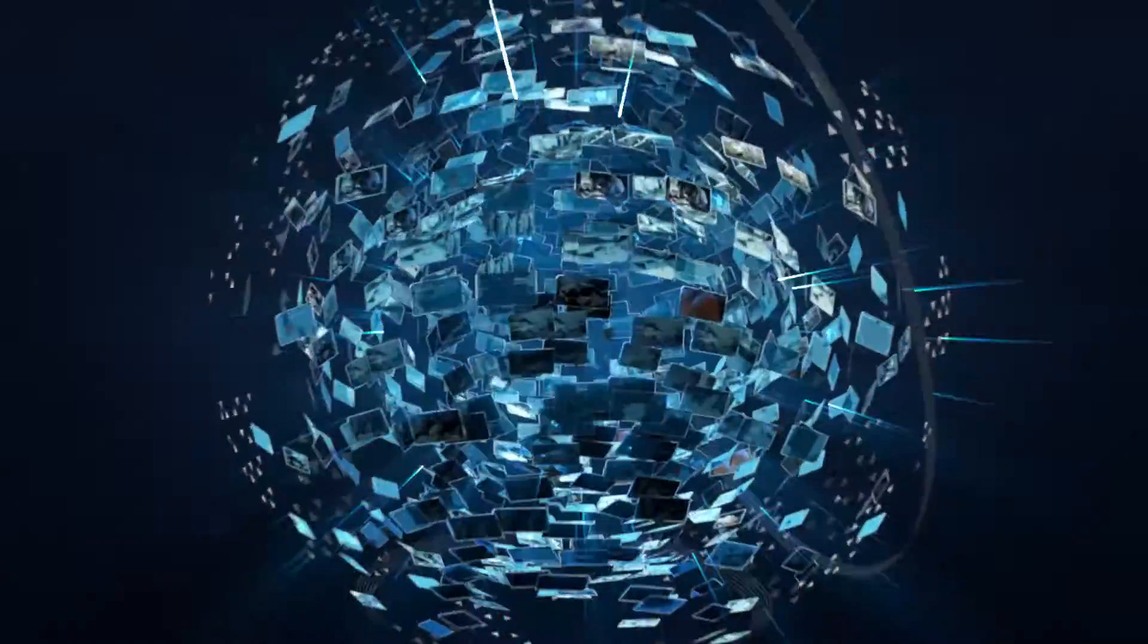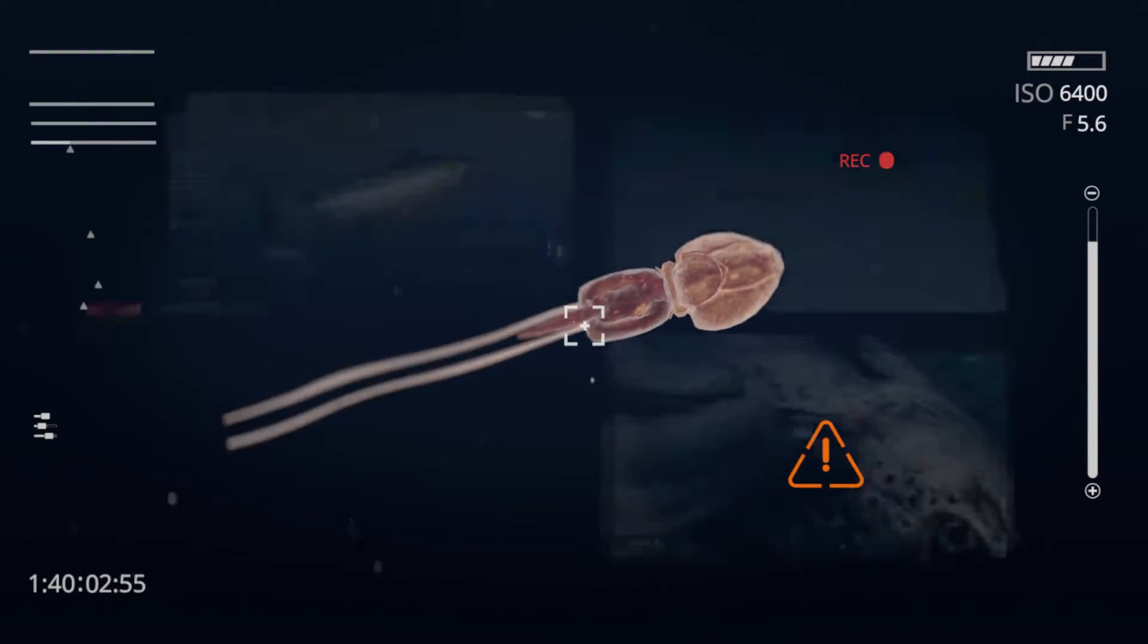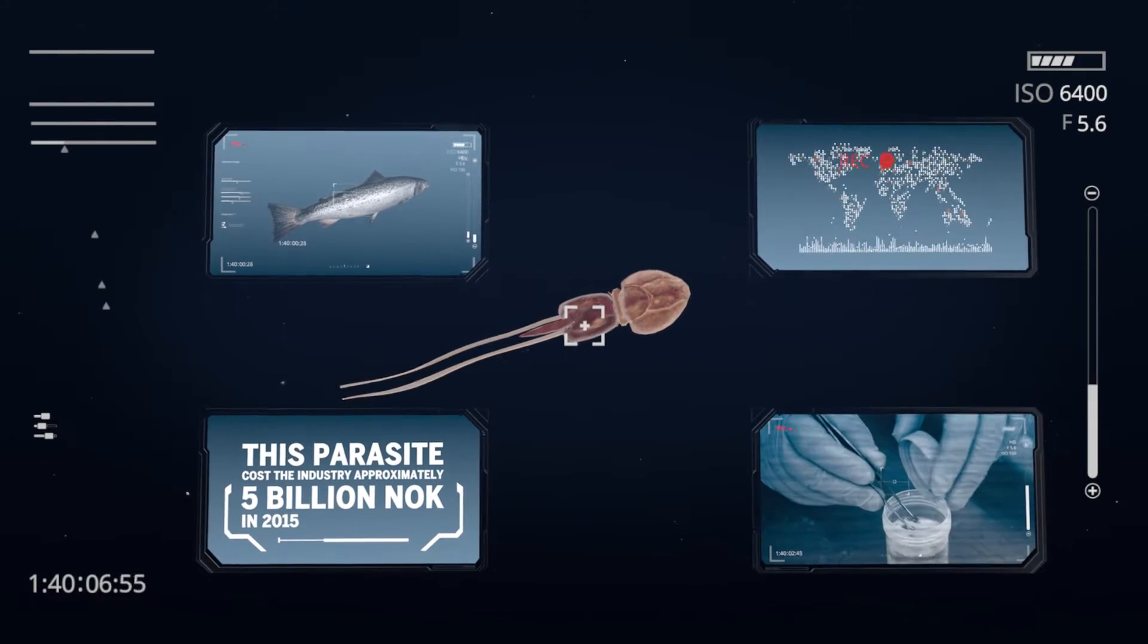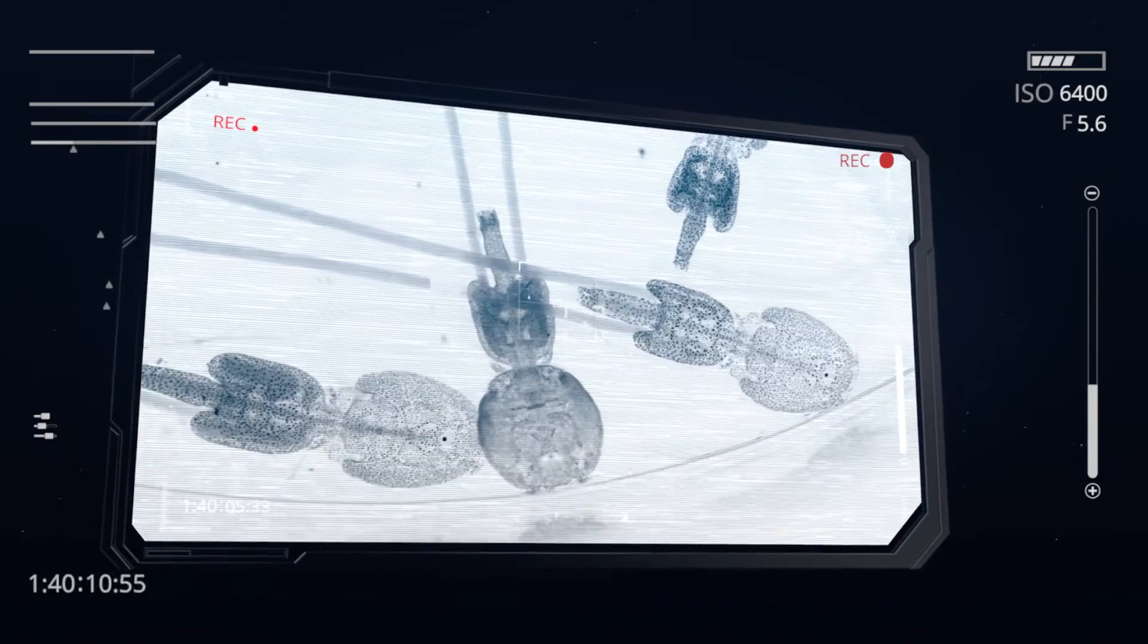Norway has huge potential for the production growth of Atlantic salmon, but is currently stagnating because of challenges relating to sea lice. This parasite cost the Norwegian fish farming industry approximately 5 billion Norwegian kroner in 2015 and has contributed to a dramatic increase in production costs.